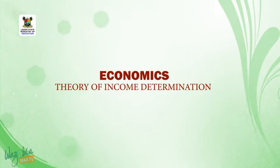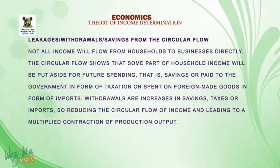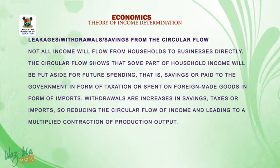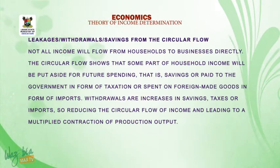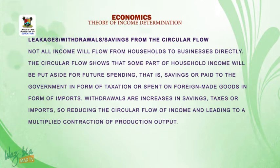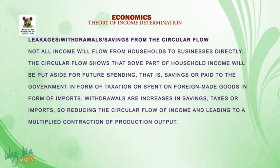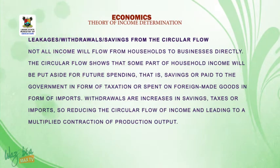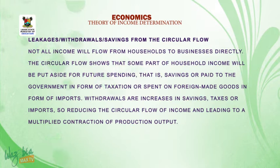We are all welcome back to the lesson on theory of income determination. We shall now be discussing the injections and withdrawals in the circular flow of income as well as the concept of savings. Not all income will flow from households or businesses directly. The circular flow shows that some parts of household income will be put aside for future spending — that is savings — or paid to the government in form of taxation, or spent on foreign made goods in form of imports. Withdrawals are increases in savings, taxes, or imports, reducing the circular flow of income and leading to a multiplied contraction of production output.